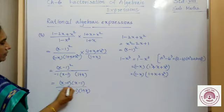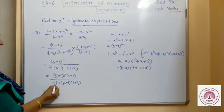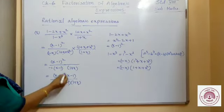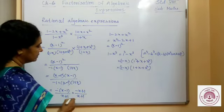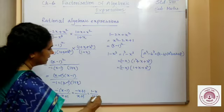After cancellation, remaining is (x - 1)² upon [(1 - x)(1 + x)]. Taking -1 out from (1 - x) gives -1(x - 1). So the expression becomes (x - 1)(x - 1) upon [-1(x - 1)(1 + x)]. One (x - 1) cancels, leaving (x - 1) upon [-(1 + x)], which is -(x - 1) upon (x + 1), equal to (1 - x) upon (1 + x).